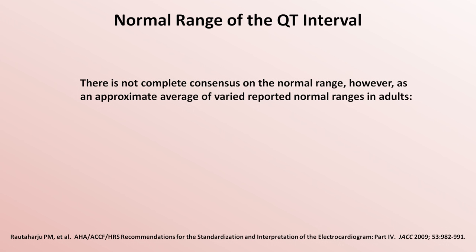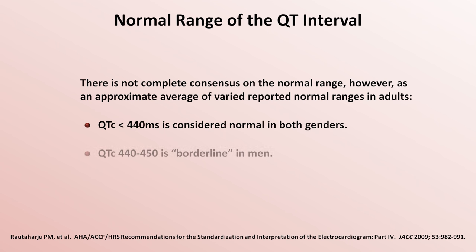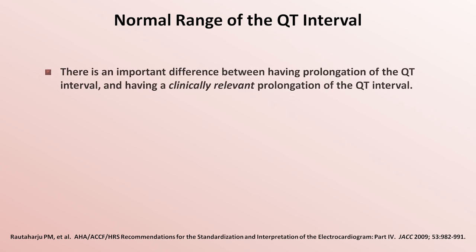However, as an approximate average of varied reported normal ranges in adults, a QTc under 440 is considered normal in both genders. A QTc of 440 to 450 is borderline in men, and one of 440 to 460 is borderline in women. There is also an important difference between having prolongation of the QT interval and having a clinically relevant prolongation. For example, a QTc of 470 is technically abnormal in all genders and ages, but it would likely not raise red flags with the overwhelming majority of internists and cardiologists, except to make them pause before prescribing drugs whose side effects include QT prolongation.